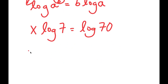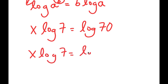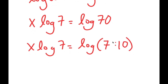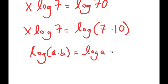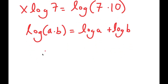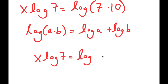Log 70 is the same thing as log of 7 times 10. And another property of logarithms is that if I have something in the form log(a times b), this is equal to log a plus log b. So log of 7 times 10 is going to equal log of 7 plus log of 10.